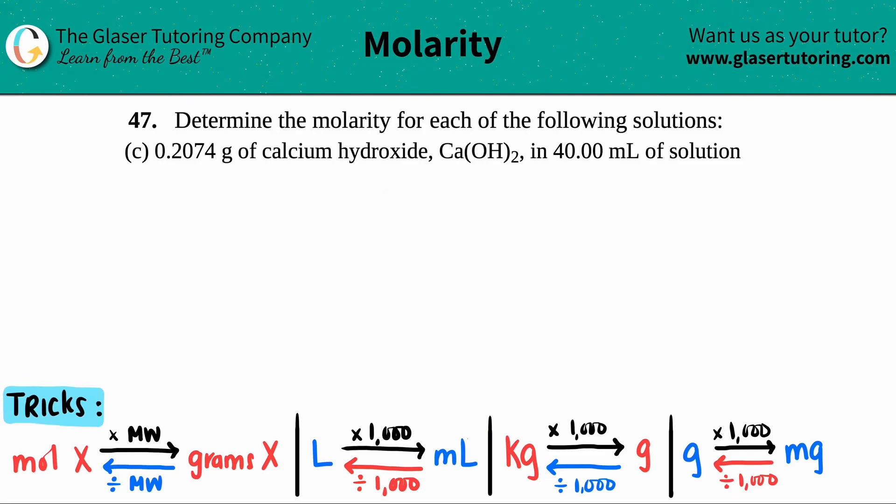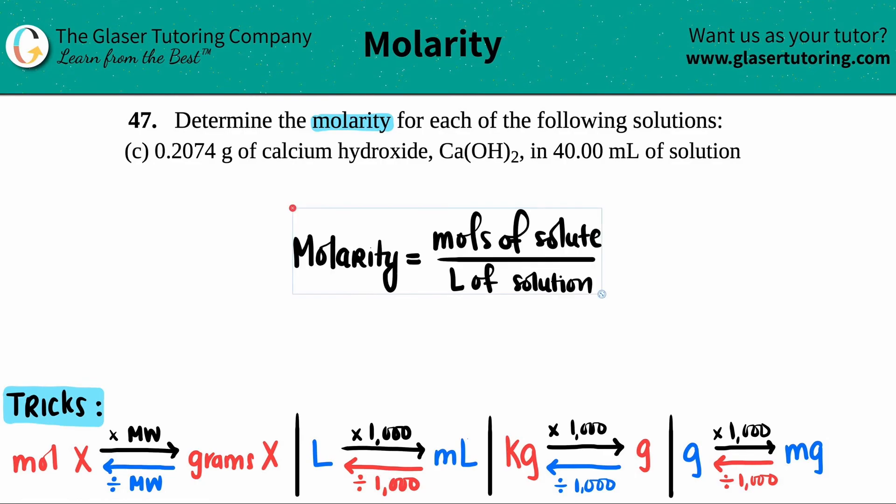Number 47: determine the molarity of each of the following solutions. Letter C: they gave us 0.2074 grams of calcium hydroxide, Ca(OH)2, in 40 mL of solution. We need to find out what the molarity is.